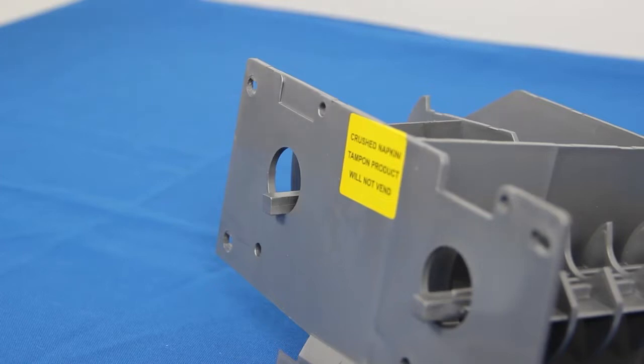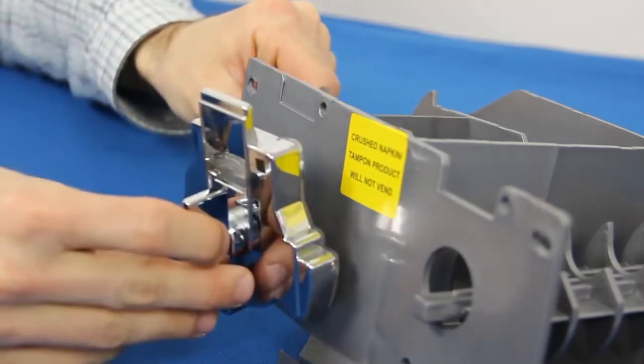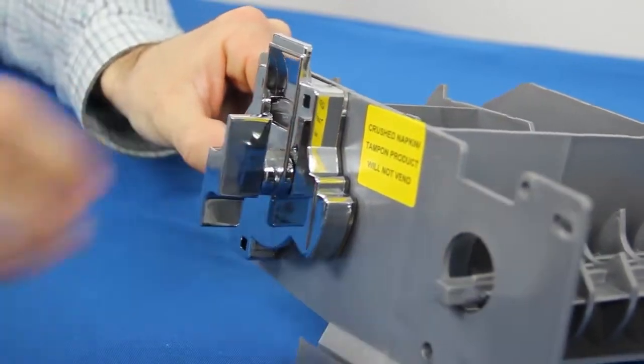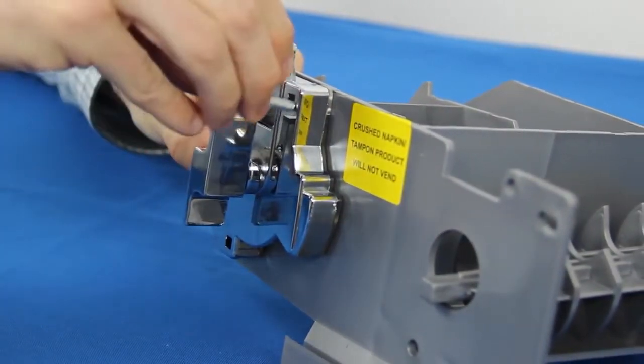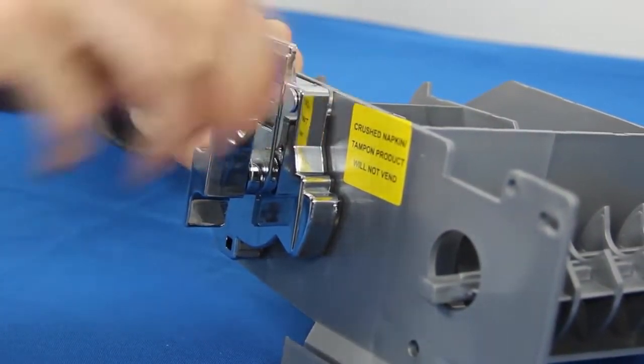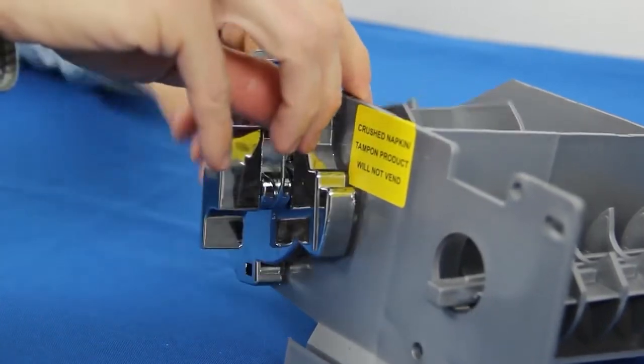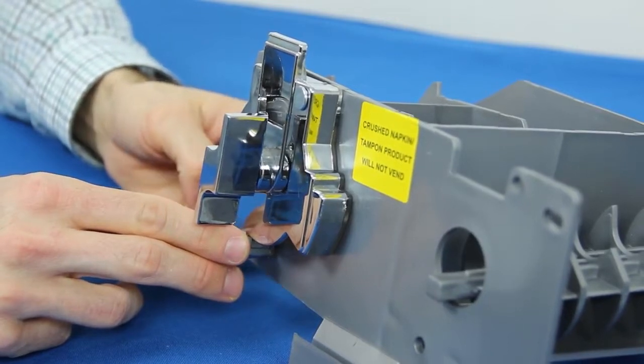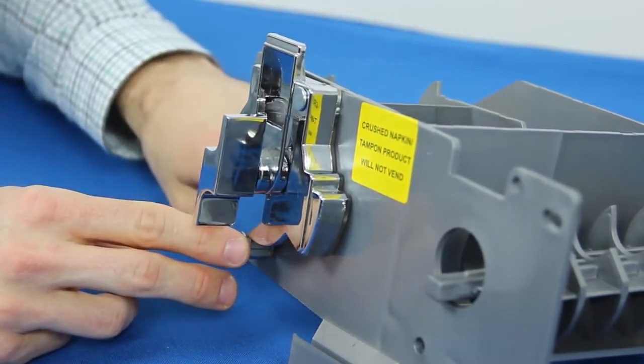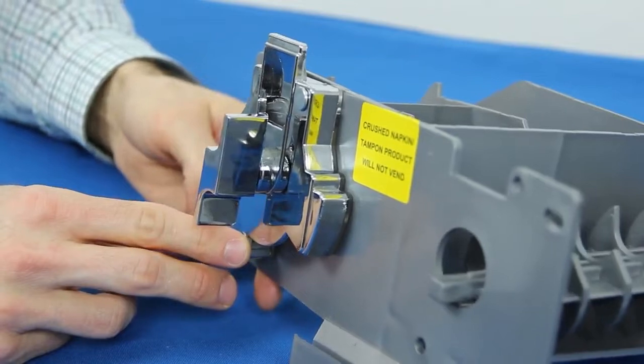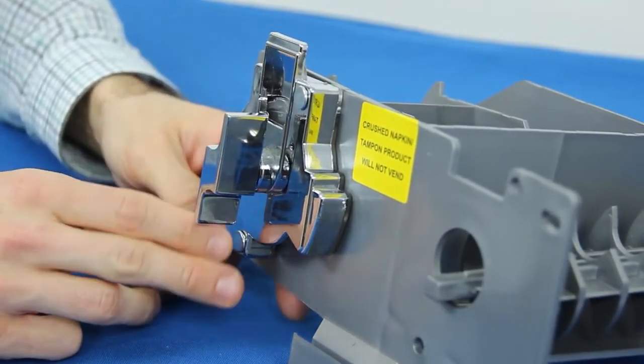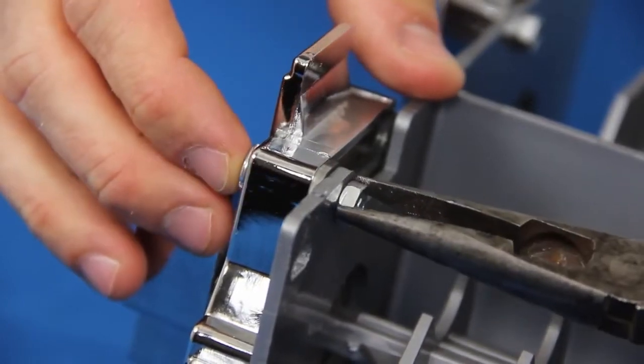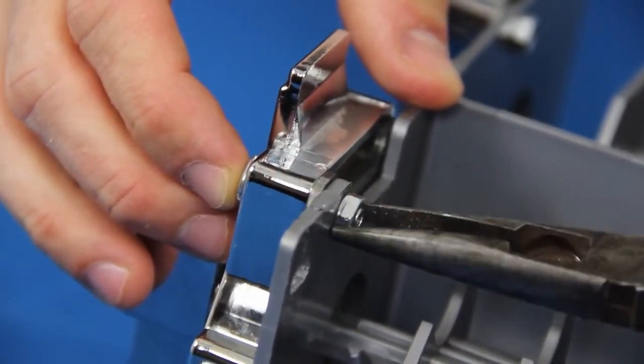Here is the same process from a different angle. Once both mechanisms have been placed, tighten the nuts with the needle nose pliers.